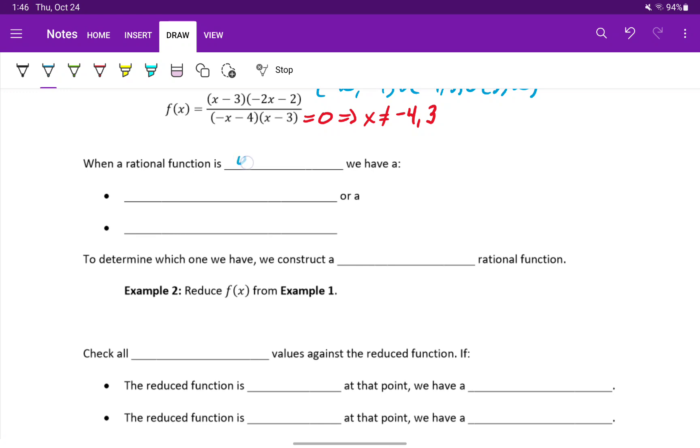But when a rational function is undefined, we've seen that there are two types of behaviors that we can encounter. We can either have a vertical asymptote, or we can have a removable discontinuity.